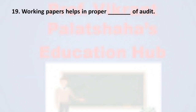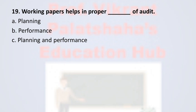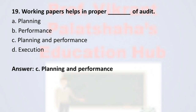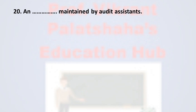Question number nineteen: working papers help in proper planning and performance of audit. The correct option is option C, planning.